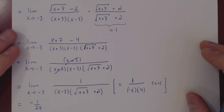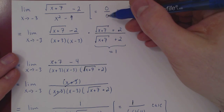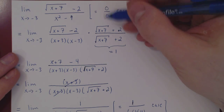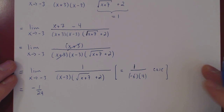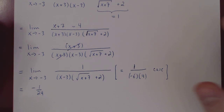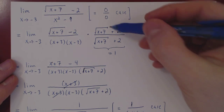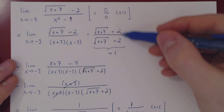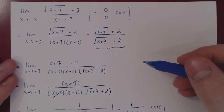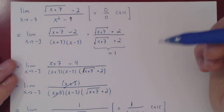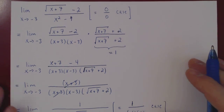Once again, we had a 0 over 0 case — an indeterminate case — and the answer ended up being negative 1 over 24. The only new idea is conjugation. Let's do one more example, where instead of a negative we'll have a positive, and we'll see that everything works in the same way.